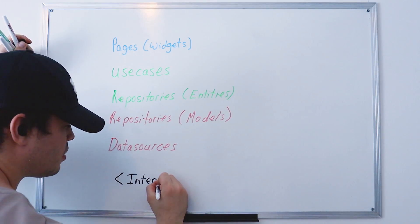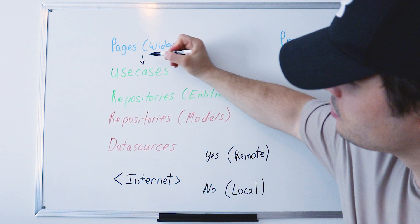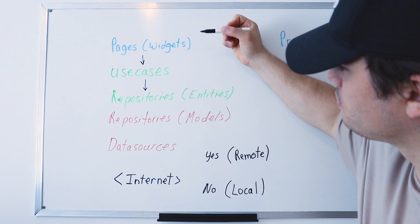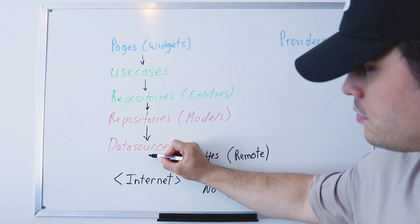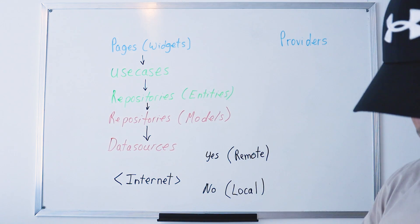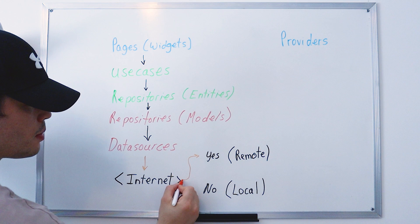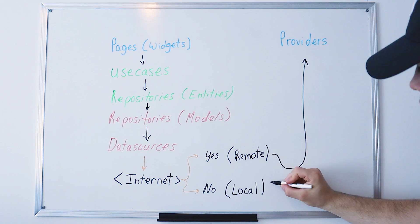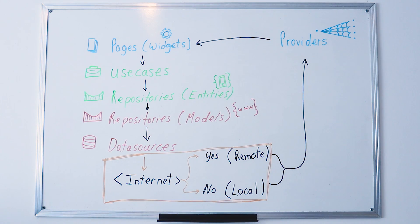Before we code, make sure you understand the flow. Pages contain widgets. When the user clicks a button, it triggers a use case — for example, get the data of something. This passes through the repository of the business layer, then into the repository of the data layer. The data layer repository uses the data source, which introduces a new concept: the data source follows a logic. If there is an internet connection, it goes to the remote data source to get data from an online API. If there is no internet connection, it gets data from the local database on the phone. Once the data comes from the data source, it updates the provider, which changes the values and refreshes the pages and widgets, so the user sees the new data.